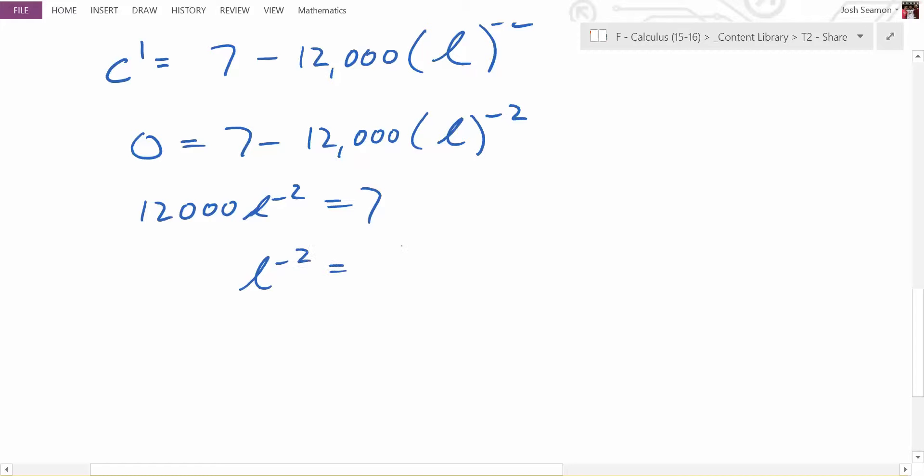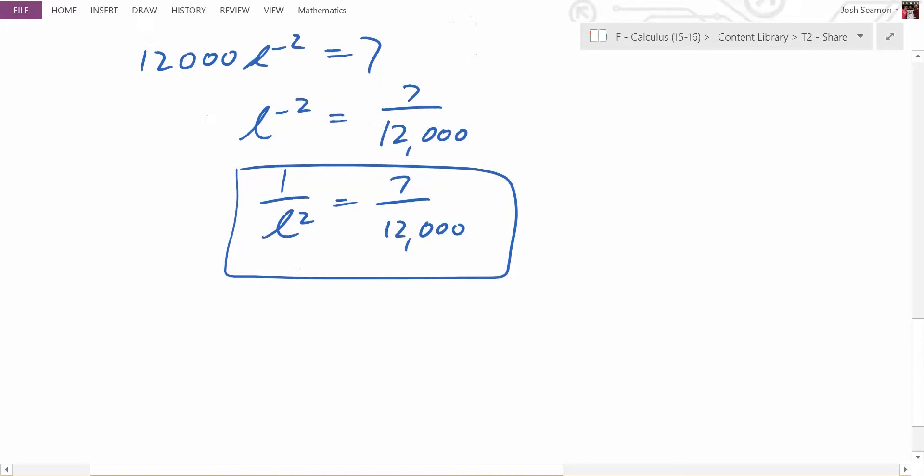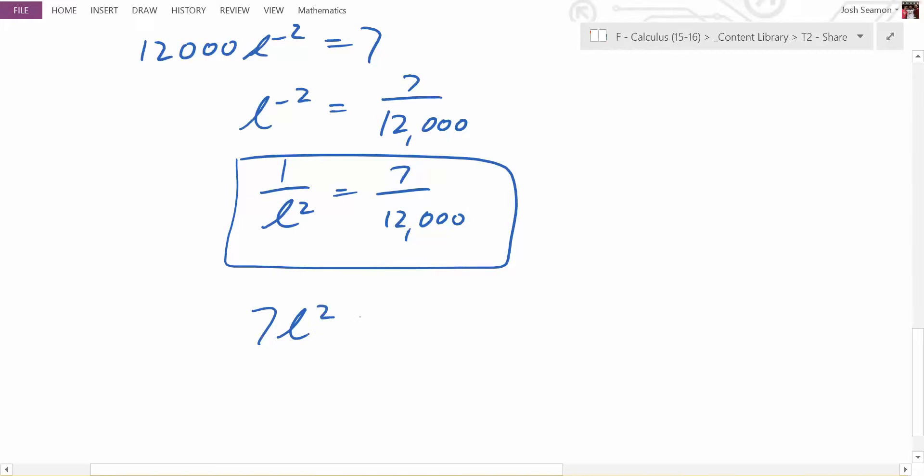So L to the negative 2 is equal to 7 over 12,000. Now what do you do? What is L to the negative 2? 1 over L squared. Yep. So at this point, what could you do if you wanted to? You have a fraction equals a fraction. So what can you do? Cross multiply. 7L squared is equal to 12,000. So L squared is equal to 12,000 over 7.